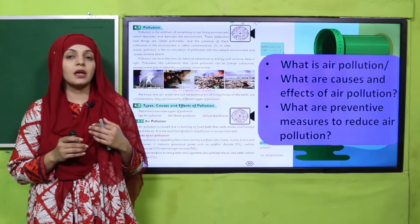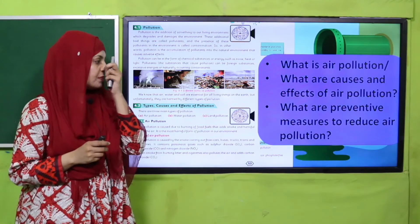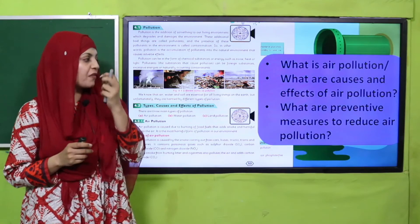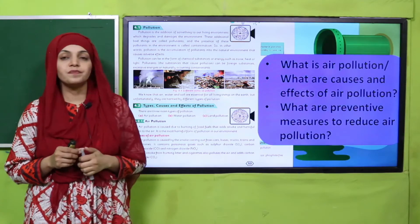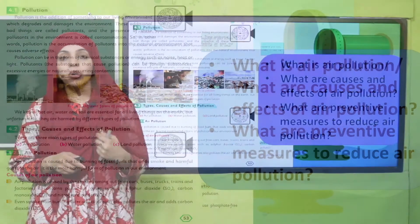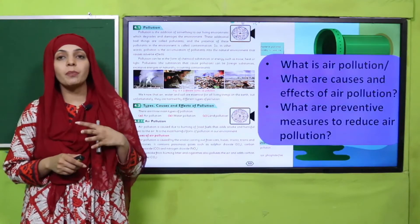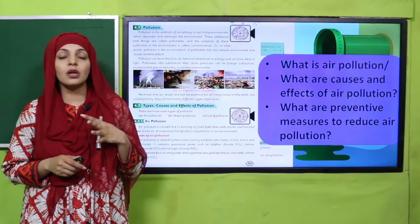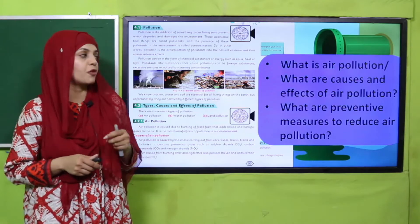Air pollution also causes acid rain. What are the preventive measures to reduce air pollution? We must plant more and more trees, and we must limit the use of fossil fuels.